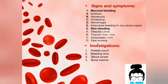Then you do investigations — first to confirm the disorder, and second to know why the disorder is present. You do a platelet count: if it is low, you know it is a quantitative platelet disorder. You do bleeding time, where you prick the patient's finger and measure how long it takes for the bleeding to stop. You do a blood smear, which helps you count the platelets and check their shape — if something is wrong with platelet morphology, the blood smear will reveal it. Lastly, you do a bone marrow biopsy.